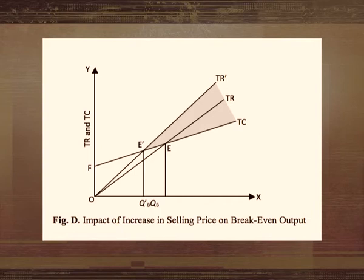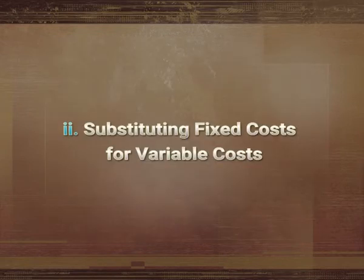Figure D shows the impact of an increase in selling price on break-even output. The second factor considered by firms is substituting fixed cost for variable cost. Instead of raising the selling price, the firm may substitute fixed cost for variable cost in some operations. For instance, when wage rates of labour rise, many firms automate some production operations, replacing variable labour cost with fixed capital equipment. Substitution of fixed capital for variable cost generally raises the break-even point.